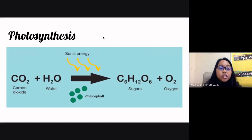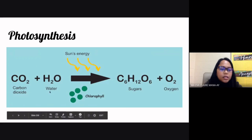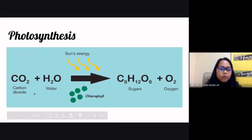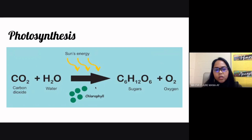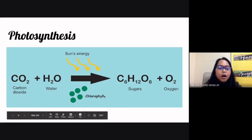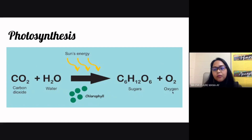For example, here we have the chemical reaction for photosynthesis — the process through which plants make their food. In this reaction, your reactants are carbon dioxide and water. In the presence of sunlight, harnessed by chlorophyll, the green pigment in plants, these are converted into glucose and oxygen.